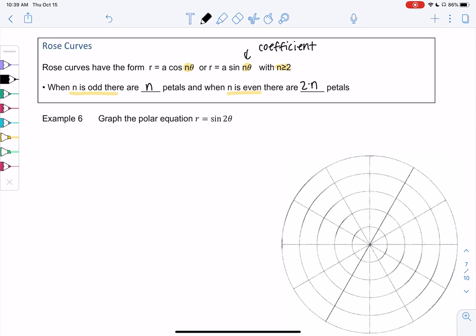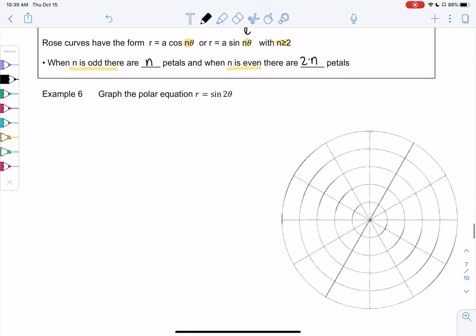Let's start with an example and see what happens. Example 6: Graph the polar equation r equals sine 2 theta. This will be a rose curve with 2n petals, so that'll be 4 petals here. It's going to make some sort of flower with 4 petals. That gives me a hint in what I'm looking for.